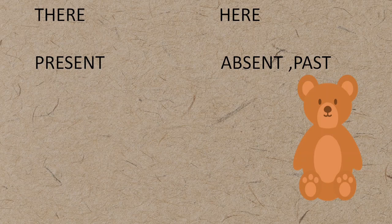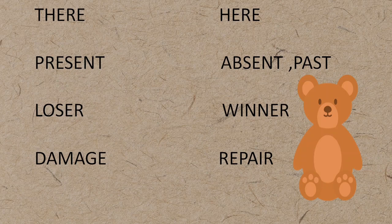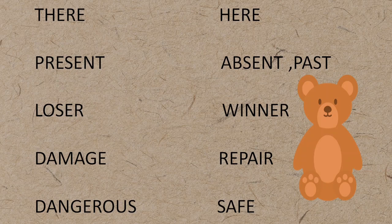'Present' is used in two ways in English — उपस्थित (present in attendance) and वर्तमान (present tense). Its opposites are different for each: 'absent' (अनुपस्थित) and 'past' (भूतकाल). 'Loser' (हारा हुआ) — opposite: 'winner' (जीता हुआ). 'Damage' (क्षतिग्रस्त/टूटा खराब) — opposite: 'repair' (मरम्मत). 'Dangerous' (खतरनाक) — opposite: 'safe' (सुरक्षित).